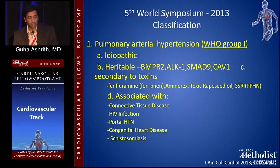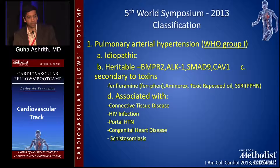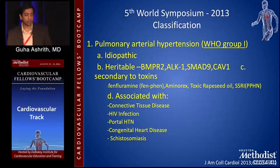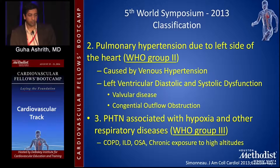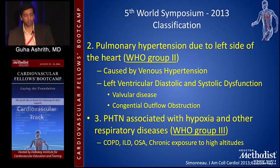The WHO classification Group 1 is pulmonary arterial hypertension, where the wedge pressure is under 15, PA mean pressure is over 25, with a PVR over 3. This is what used to be called primary pulmonary hypertension, and it can be subdivided into idiopathic, heritable, and those associated with connective tissue disease, HIV, portal hypertension, and congenital heart disease. The most common cause of pulmonary hypertension is WHO Group 2, which is left-sided heart disease driven — these are patients with elevated wedge pressure, formerly called post-capillary pulmonary hypertension.